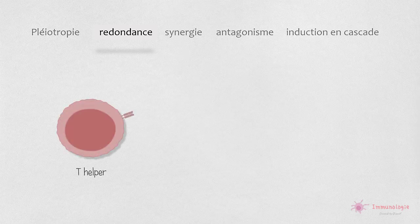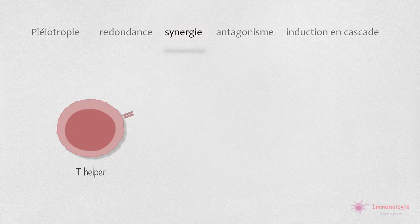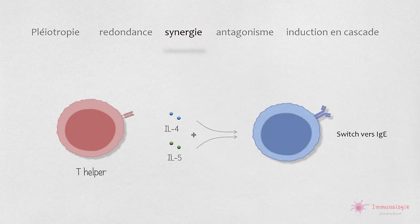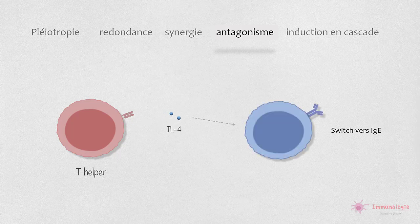Lorsque deux ou plusieurs cytokines ont des effets similaires, on parle de redondance. Si les effets de différentes cytokines se complètent et se renforcent, on parle alors d'interactions synergiques. Dans certains cas, une cytokine peut contrecarrer l'action d'une autre cytokine, provoquant un antagonisme.